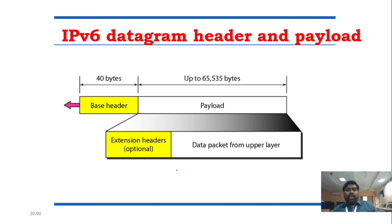The basic structure of an IPv6 packet has a base header which is 40 bytes long. The remainder is the payload. Within the payload, you will have extension headers.